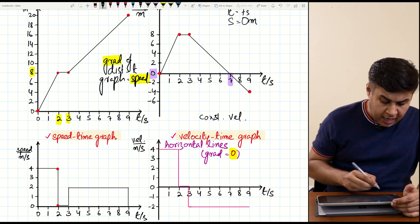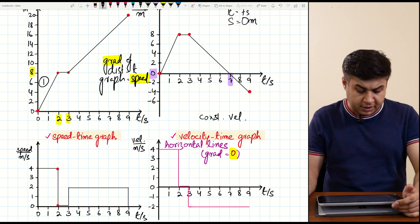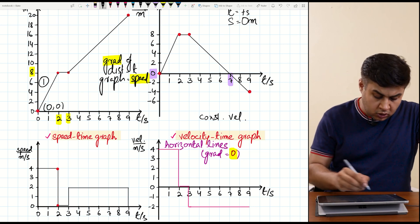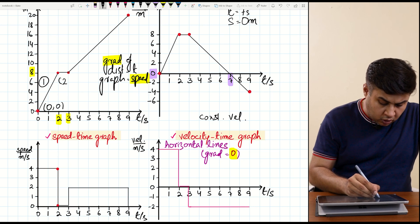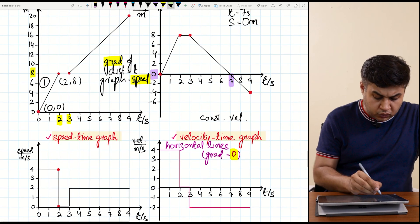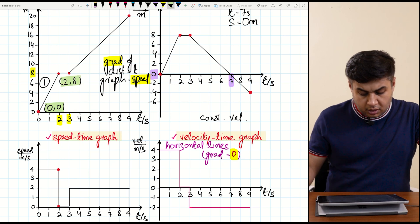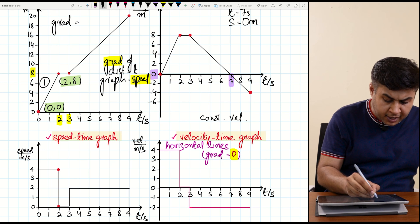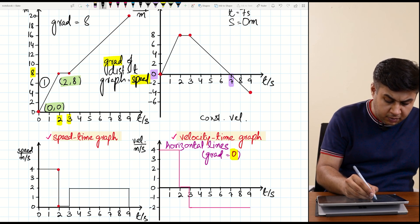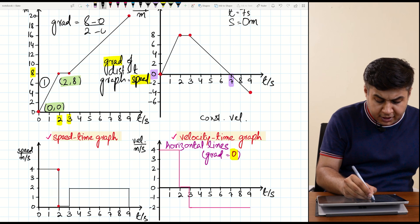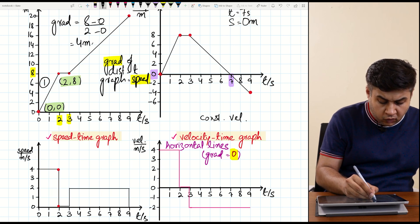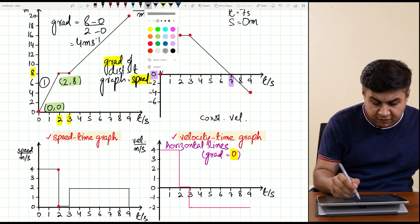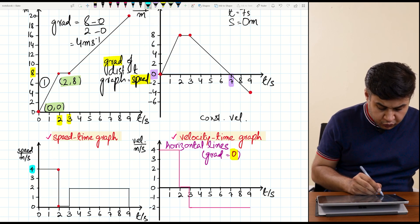The gradient of the distance-time graph gives you the value of speed. For example, for the first part of the journey, taking coordinates (0, 0) and (2, 8) and using the gradient formula y2 minus y1 divided by x2 minus x1, we get 8 minus 0 divided by 2 minus 0, which equals 4 meters per second. That is the speed for the first two seconds. The horizontal line in the rest segment has a gradient of zero, confirming zero speed.